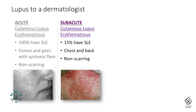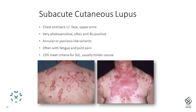Moving on to subacute cutaneous lupus: about 15% of these patients will meet criteria for systemic lupus, but the rest will not. It's a very characteristic rash that happens on the chest and back in a V-shaped distribution. Fortunately it is not scarring — when under better control it will go away. It can also appear on the neck and upper arms, is very sun sensitive, and these patients often make anti-Ro antibodies. They often have some tiredness and joint pain when rashes are flaring, but usually have a milder course of systemic symptoms.